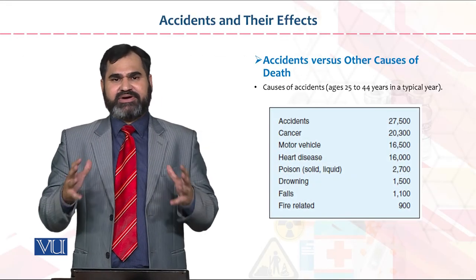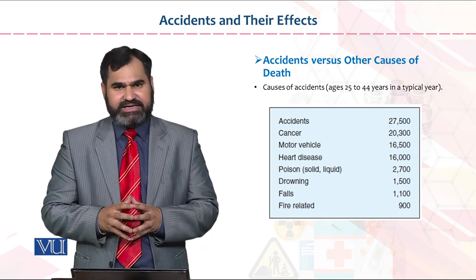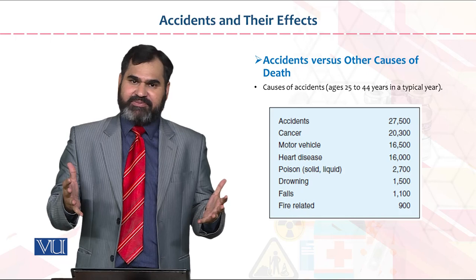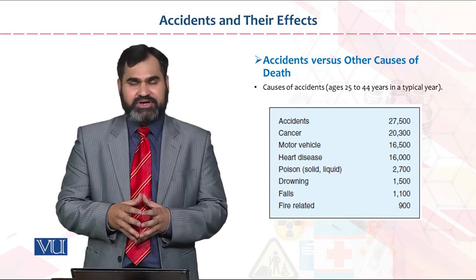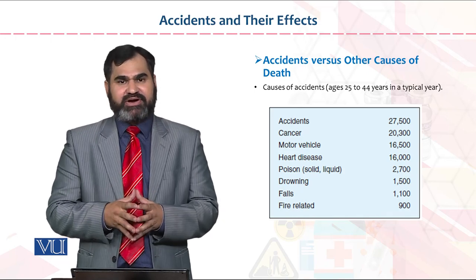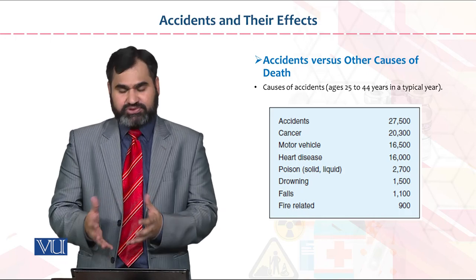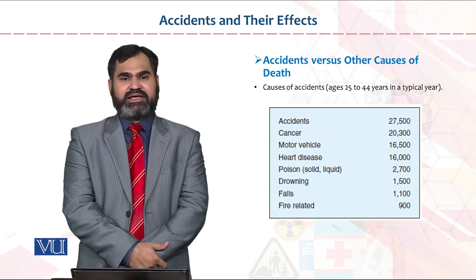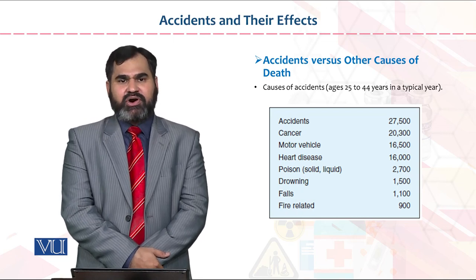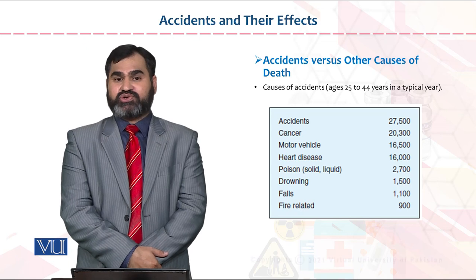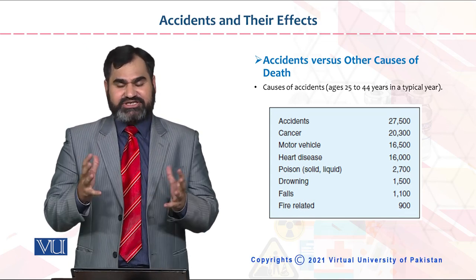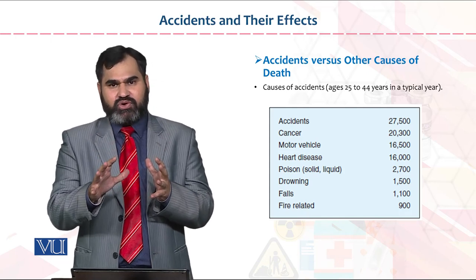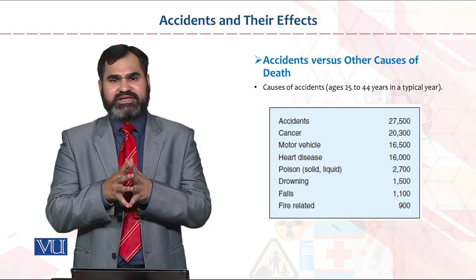Accidents versus other causes of death in the United States: accidental deaths total 27,500; motor vehicle accidents account for 16,500; fire-related issues account for 900. Overall, when an incident occurs in the United States, a proper inquiry report is prepared. Based on the inquiry report, it is determined how to ensure that such activities do not recur, so that causes of death within organizations are eliminated from every angle and a complete stoppage is placed on such incidents.